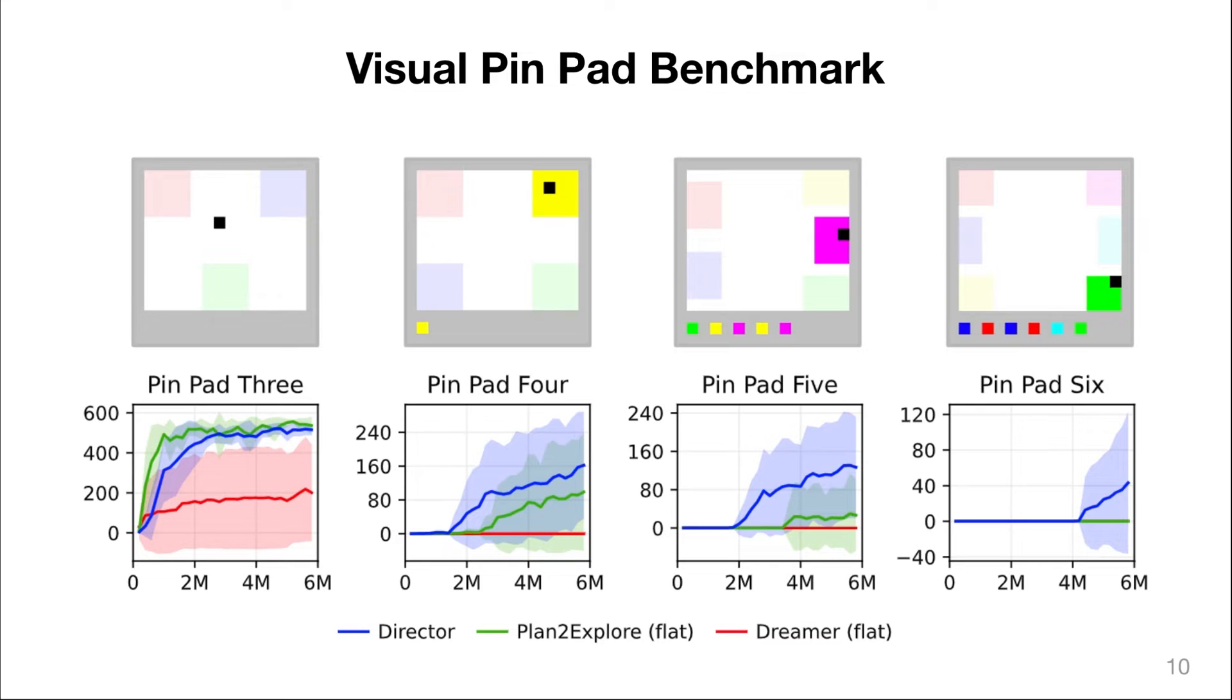The task is to find the correct order of activating the pads that then gives the sparse reward. If the agent makes one mistake within the sequence, it has to start from the beginning. At the bottom of the screen, the agent also sees a history of the previously activated pads so that the environment is fully observed.